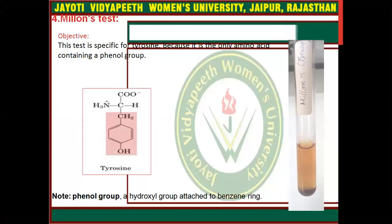In this session, first of all we will discuss about the Millon test. This test is specific for tyrosine because it is the only amino acid containing a phenol group — a hydroxyl group attached to the benzene ring.